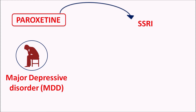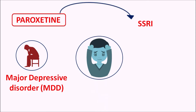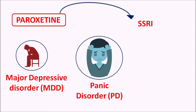Paroxetine can also be indicated for anxiety disorders. It can be indicated for panic anxiety disorder, which is associated with panic symptoms such as increased heart rate, palpitations, tremor, and sweating. Such symptoms along with anxiety can be controlled by paroxetine.